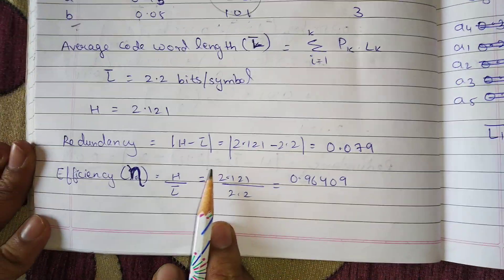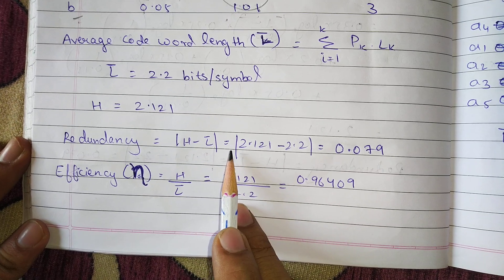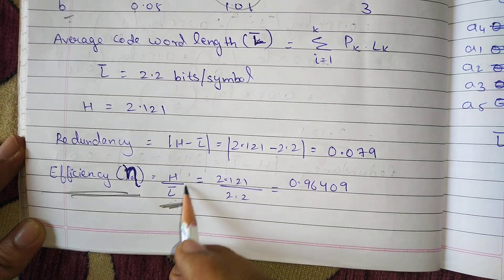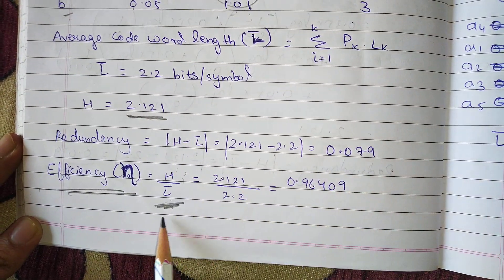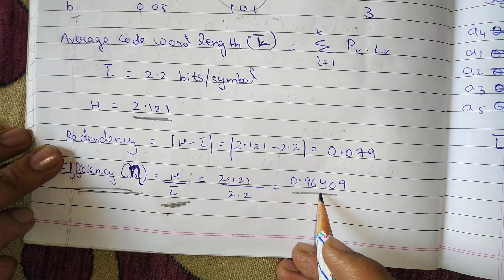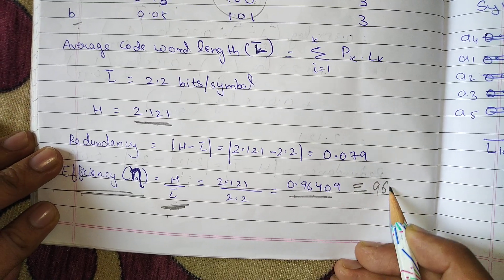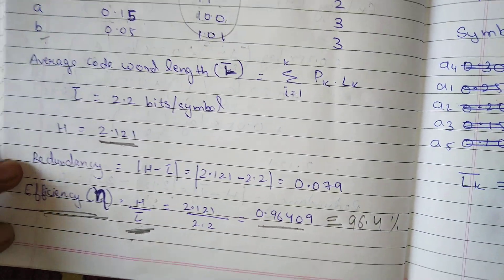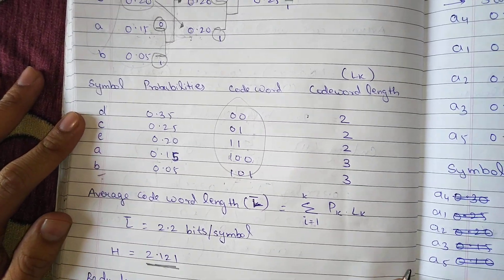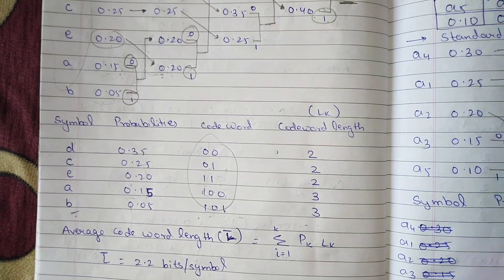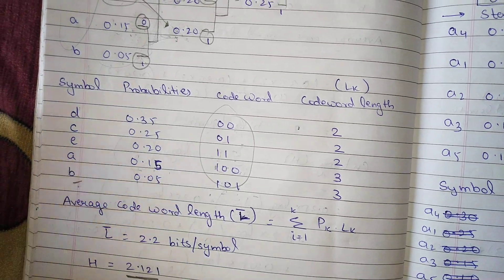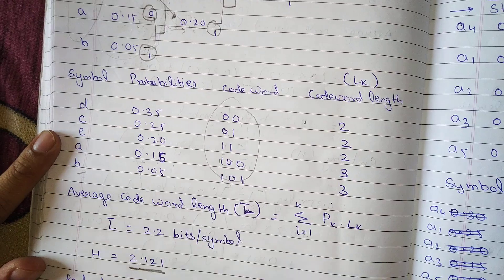Find the average codeword length using the same formula, and entropy using the same formula — entropy will remain the same at 2.121. Redundancy is |H − L̄|. Efficiency, which is not asked in this question but useful to know, is H / L̄. With entropy 2.121 and average codeword length L̄, this gives an efficiency of 0.964, which is 96.4%.